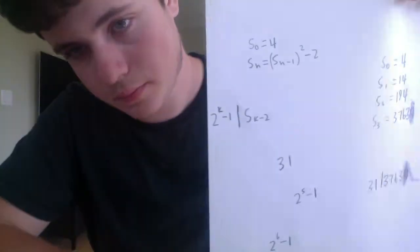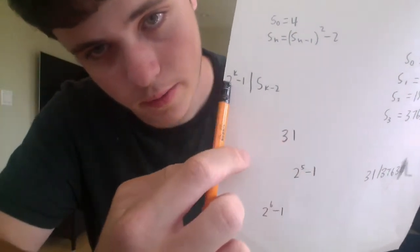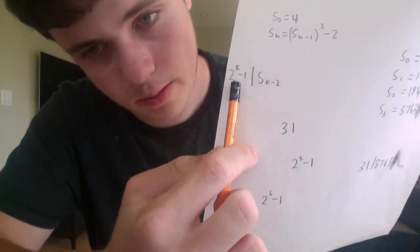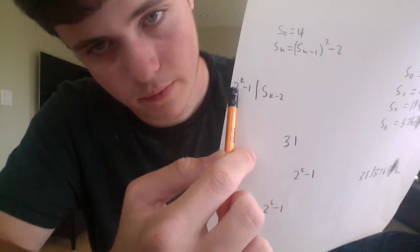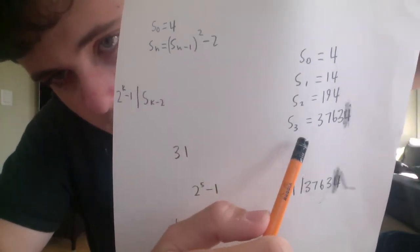Now we will show an example where the Lucas-Lehmer primality test says that a number is not a prime. 63 is not a prime because it is divisible by 3. We are going to run 63 through the Lucas-Lehmer primality test and see what we get. 63 is 2 to the power of 6 minus 1, so k equals 6. Therefore, we want to see if 2^6 minus 1 divides S4. We already calculated S1 through S3, so I'm just going to find S4 off those values.